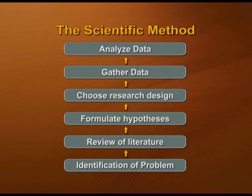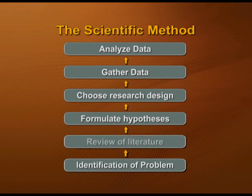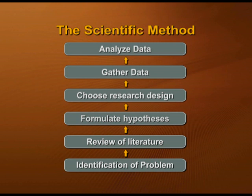When we talk about the scientific method, it starts with identifying the problem — what is the problem and why does that particular problem exist. Then we come on to the review of literature, where the researcher tries to find out what has already been researched about that phenomenon and reviews that literature in detail. Based on that review, they formulate their hypothesis. A hypothesis is an assumption we make — for example, when studying the impact of electronic media on youth, we may hypothesize that the aggressive behavior of youth is due to violent programs they are watching on television.